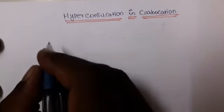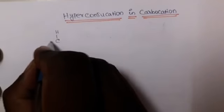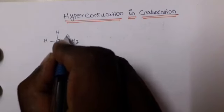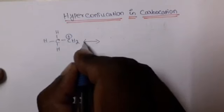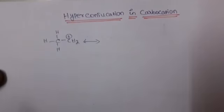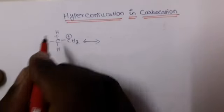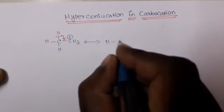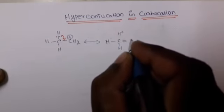Now let us explain how hyperconjugation takes place in Carbocation. Take the example CH3 single bond CH2 plus. In this compound, any one of the Hydrogens may contribute to hyperconjugation. This bond has two Electrons; one Electron shifts over to form a double bond. So the Hydrogen is detached and we get a double bond, giving CH2.